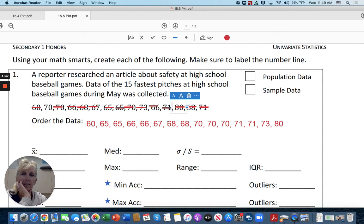So four, five, six, seven, eight, nine, 10, 11, 12, 13, 14, 15. One, two, three, four, five, six, seven, eight, nine, 10, 11, 12, 13, 14, 15. They're in order from least to greatest now.